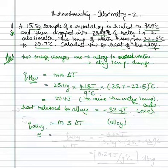To calculate the specific heat: Q of the alloy divided by the mass and delta T. This equals minus 334 joules. The mass of the alloy is 15.5 grams, and delta T is 25.7 minus 98.9 degrees Celsius.